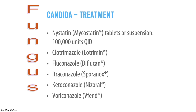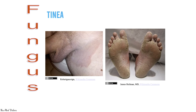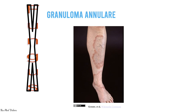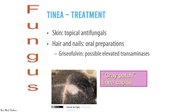Treatment for candidiasis includes antifungal medications such as nystatin, clotrimazole, fluconazole, itraconazole, ketoconazole, or voriconazole. The next fungal infection is tinea (epidermal dermatophytes), which includes tinea pedis, tinea manuum, tinea cruris, tinea corporis, tinea facialis, and tinea capitis — also called ringworm. Diagnosis is by KOH microscopy showing septate tubular structures and spores. Treatment is topical antifungals; if hair and nails are infected, oral preparations like griseofulvin are needed.